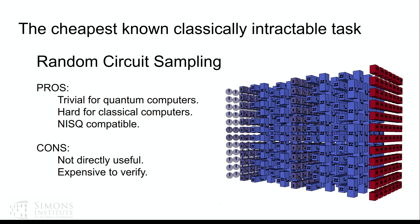The cheapest thing we know how to do that's hard classically but easy quantumly is to just generate a random circuit and run it, because that's what the quantum hardware natively does. The unpredictability and lack of structure in the gates makes it very difficult for classical computers to simulate. The downside is it's not a useful problem—maybe you can make certified random number generators—and it's not easy to check that it's working.